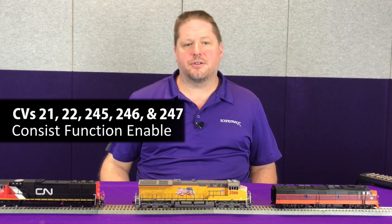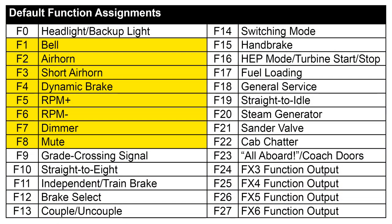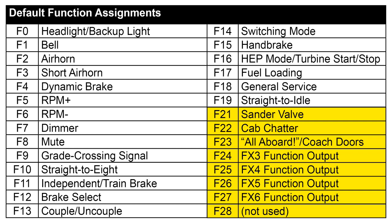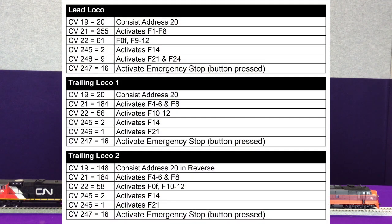Once we've done that, we go into our consist function mapping, which is set in CVs 21, 22, 245, 246, and 247. CV21 enables functions 1 through 8. CV22 enables functions 0 forward, 0 reverse, 9, 10, 11, and 12. With Soundtracks products, CV245 enables functions 13 through 20, and CV246 enables functions 21 through 28. CV247 enables auto features such as emergency stop, so we'll enable that on our locomotives as well. The list shown here is for the aftermarket Tsunami 2 function defaults — as long as you haven't moved any functions around, use these values and you can have the consist up and running relatively quickly.